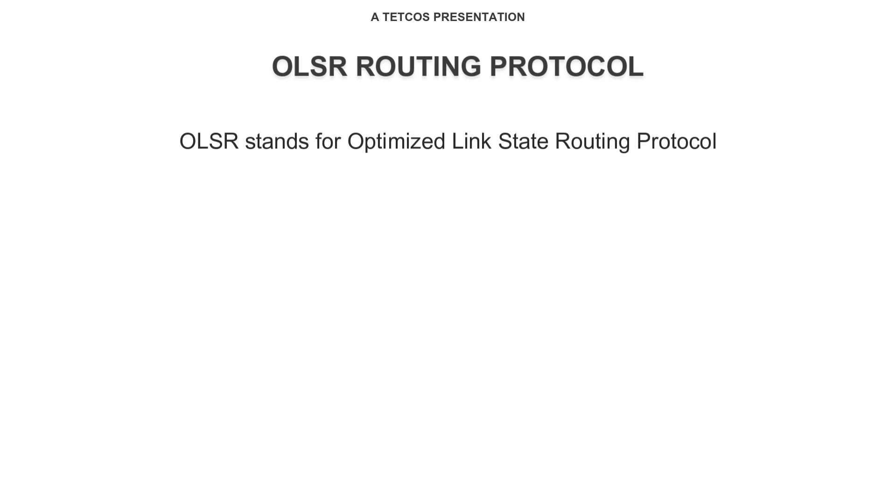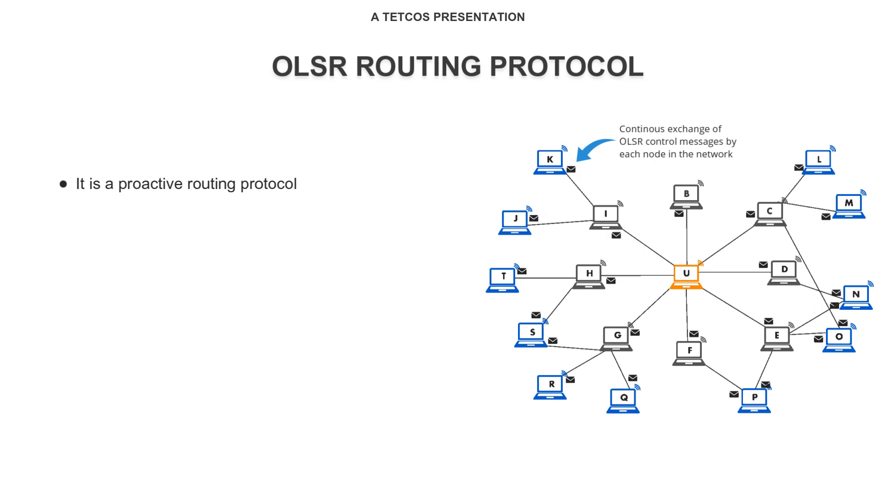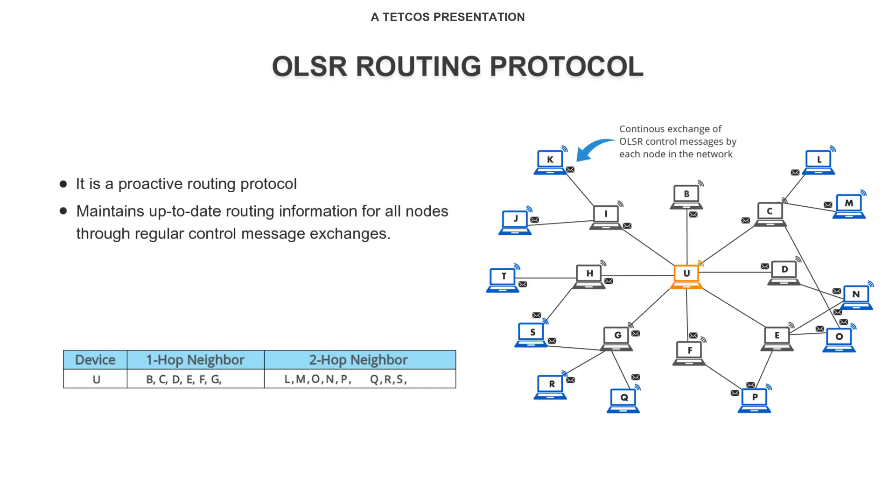OLSR stands for Optimized Link State Routing Protocol. It is a proactive routing protocol, meaning it maintains up-to-date routing information for all nodes in the network by continuously exchanging control messages, regardless of whether a route is currently needed.